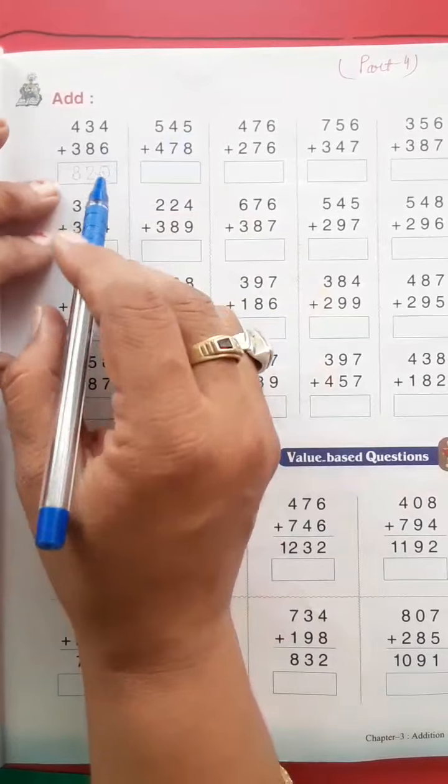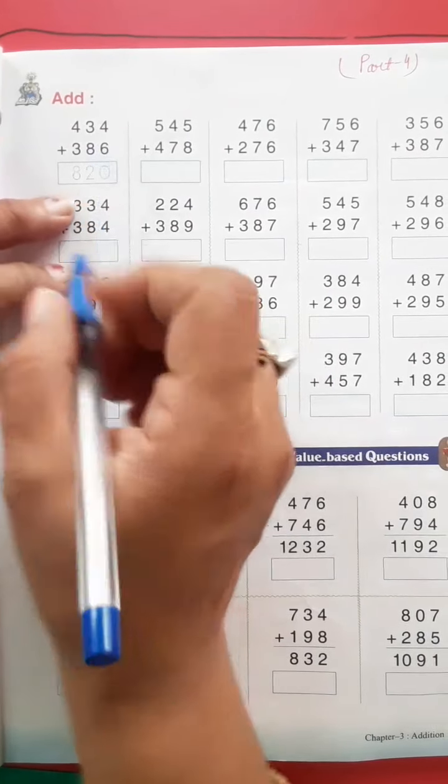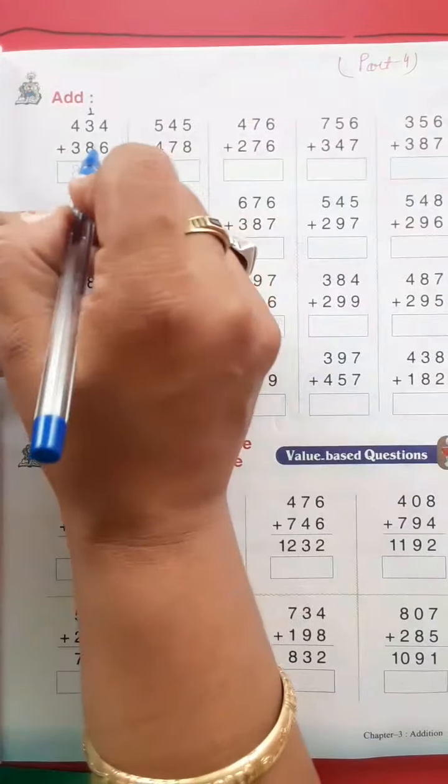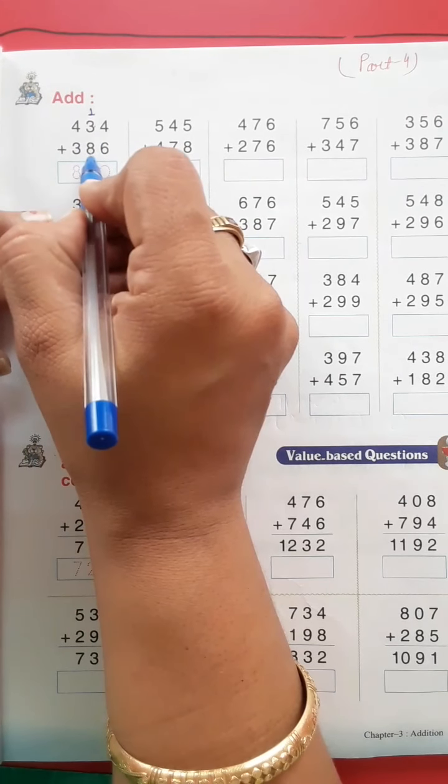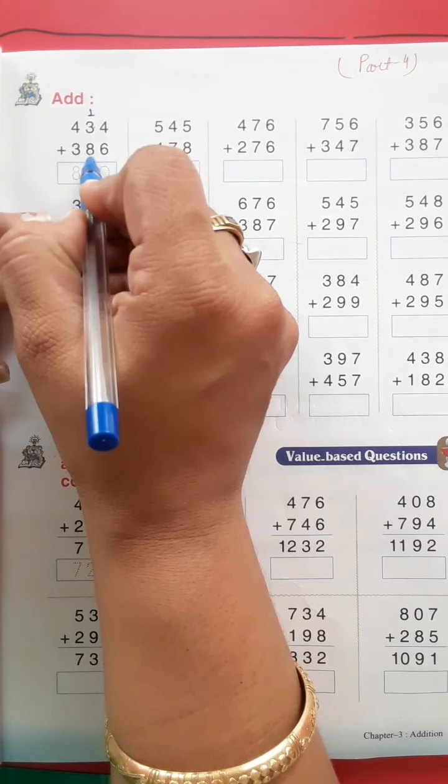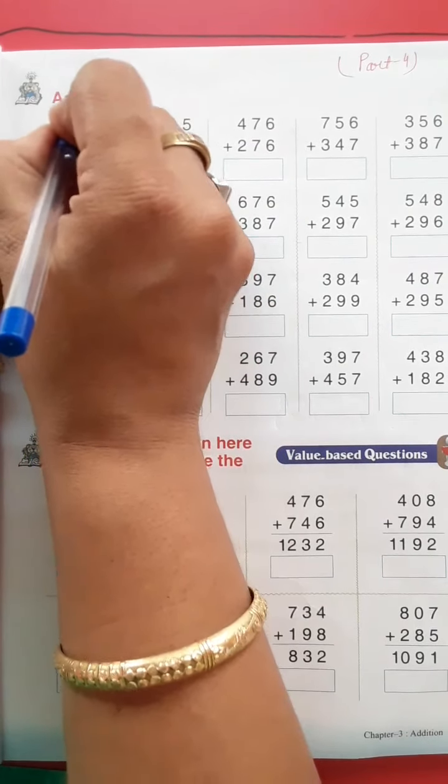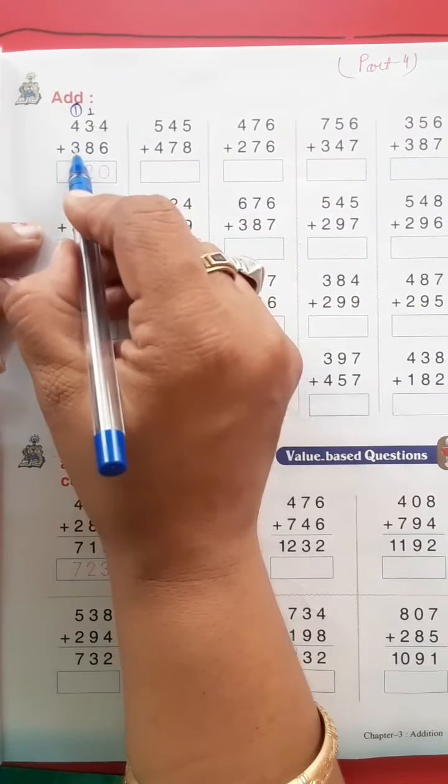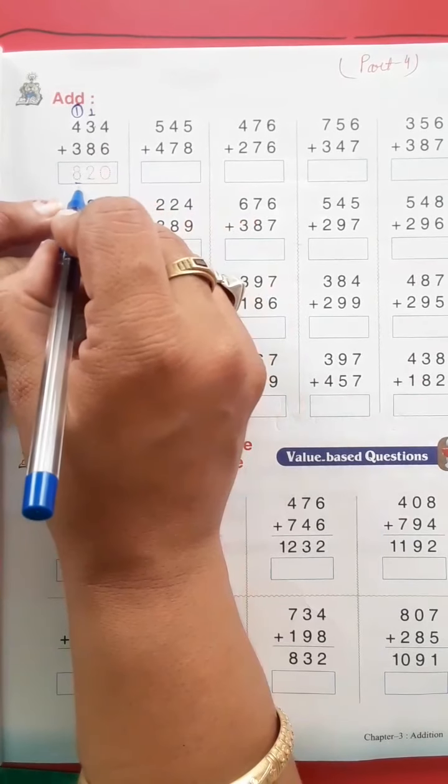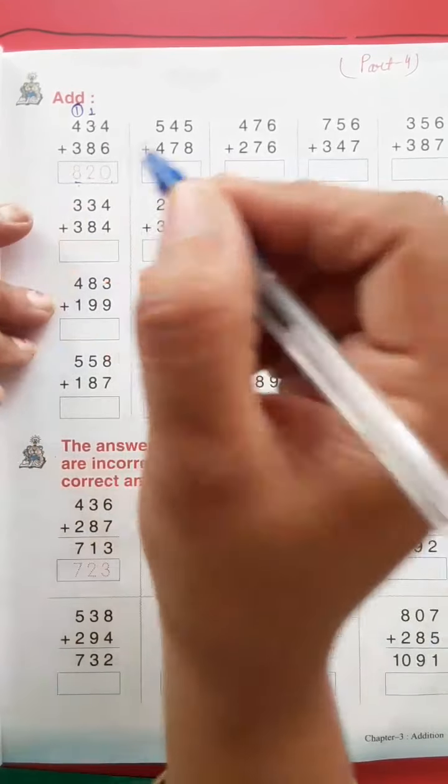Page number 63 of your book. Add. First one is done for you. Four and six is ten, 0 carry 1. Three and eight is 11, plus 1 is 12, 2 carry 1. Four and three is seven, plus 1 is eight. So this is 820.